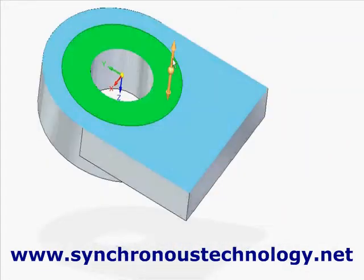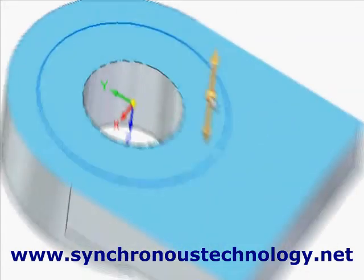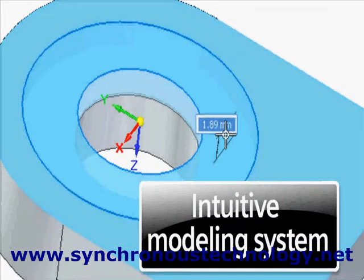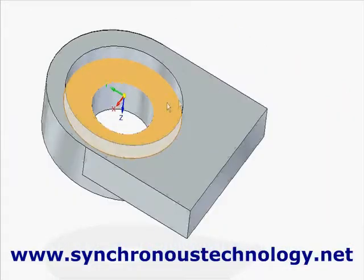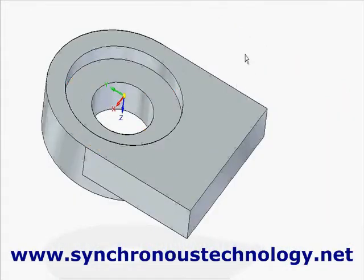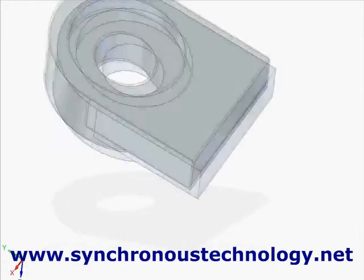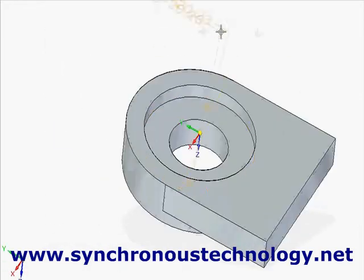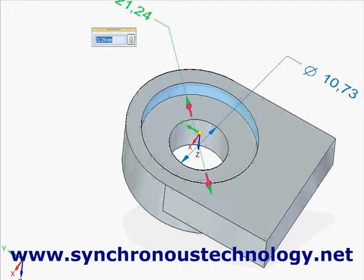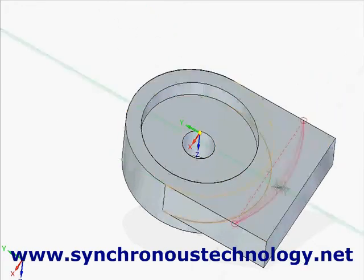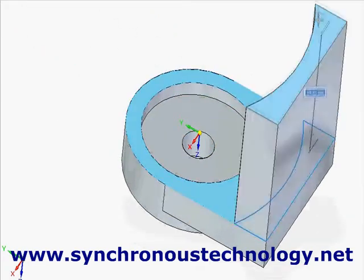Commands are inferred based on cursor position and geometric intent. Synchronous technology allows relationships to be applied to the model at any time and in any order. Adding driving dimensions directly to the 3D model is the easiest way to establish control and may be retained.